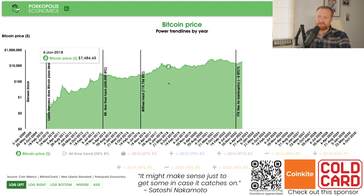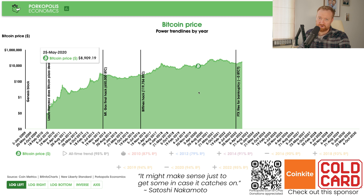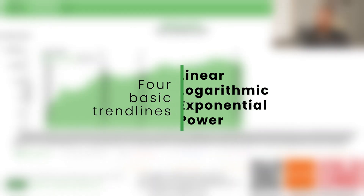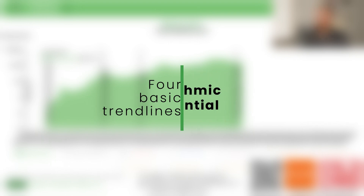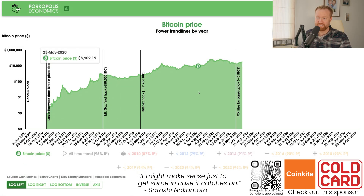What I want to do in this video is compare trend lines. The best fitting trend line in Bitcoin is a power trend line — see my prior videos where I've run these over gold, Bitcoin, and other markets. The four basic trend lines are: linear, logarithmic, exponential, and power. Bitcoin follows a power trend line.